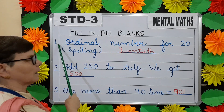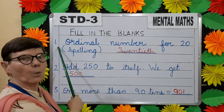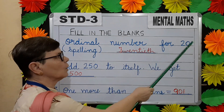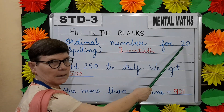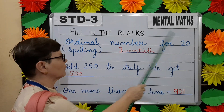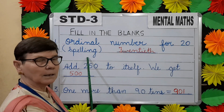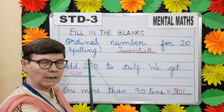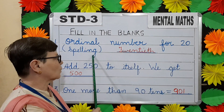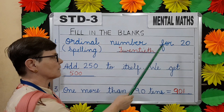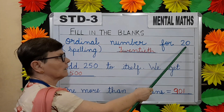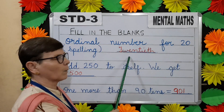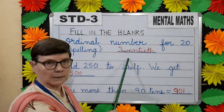Question number one. Ordinal number for twenty — you have to write it in words. Spelling means words. So what is the ordinal number for twenty? Twenty-eighth.